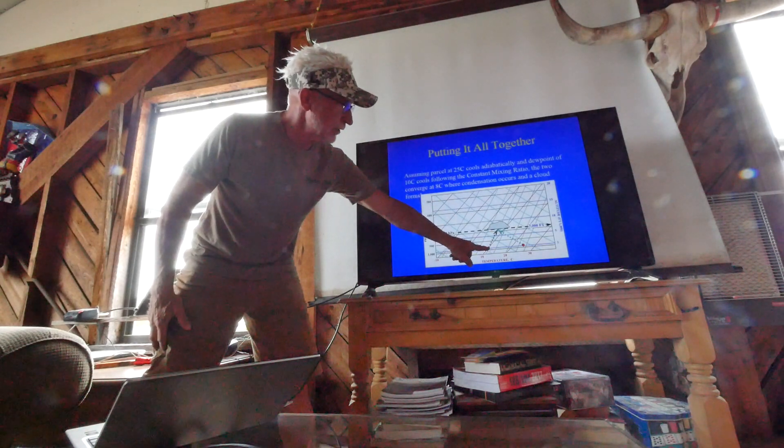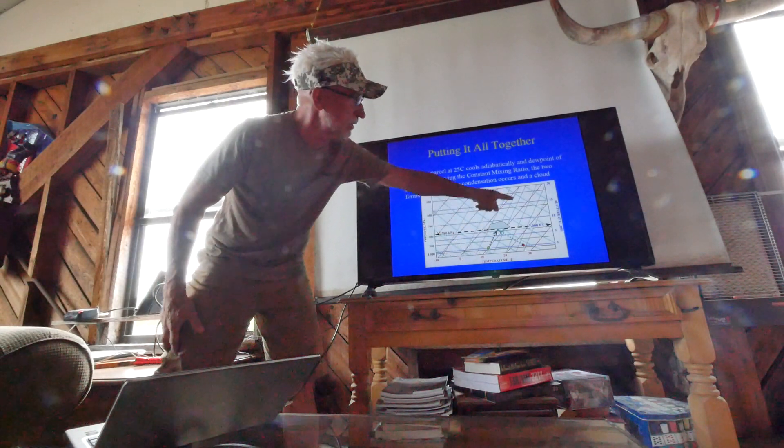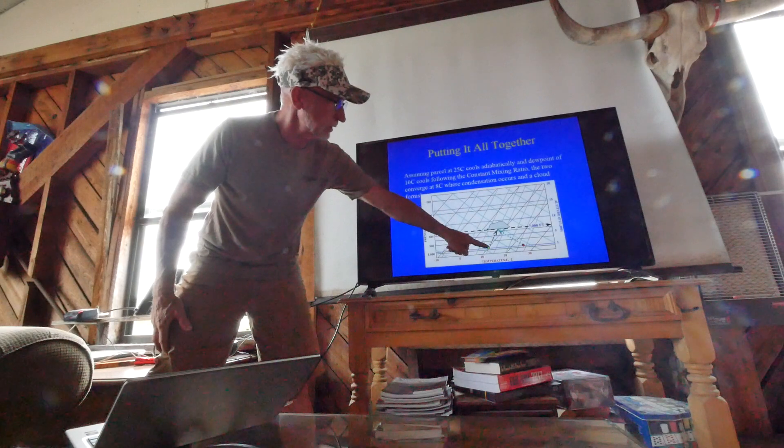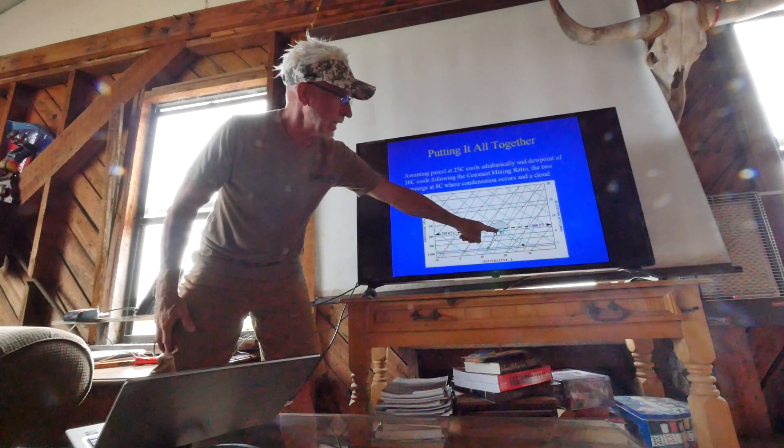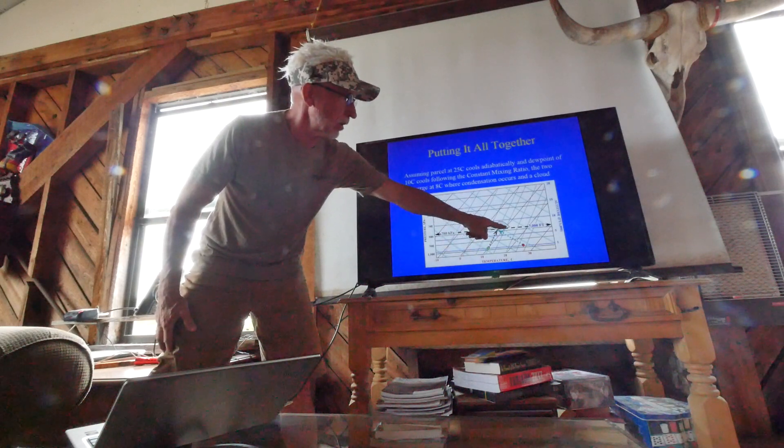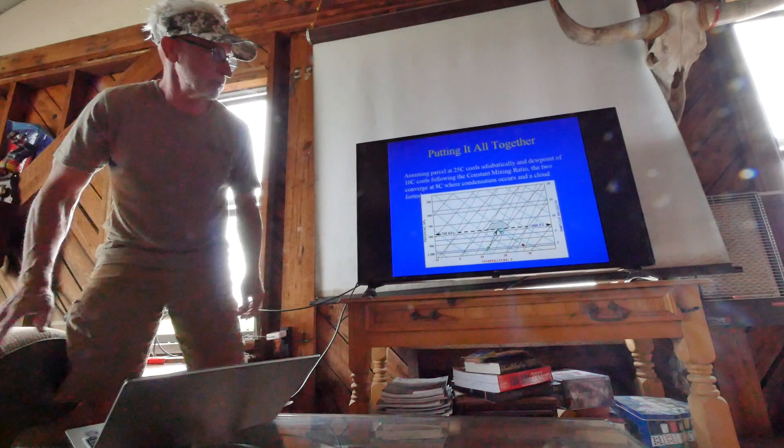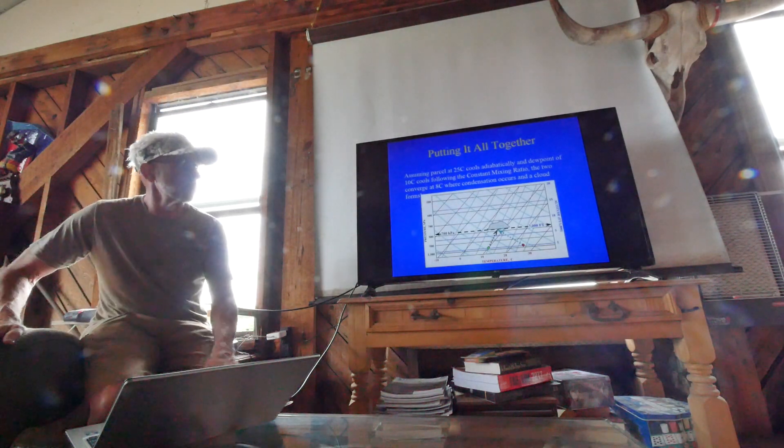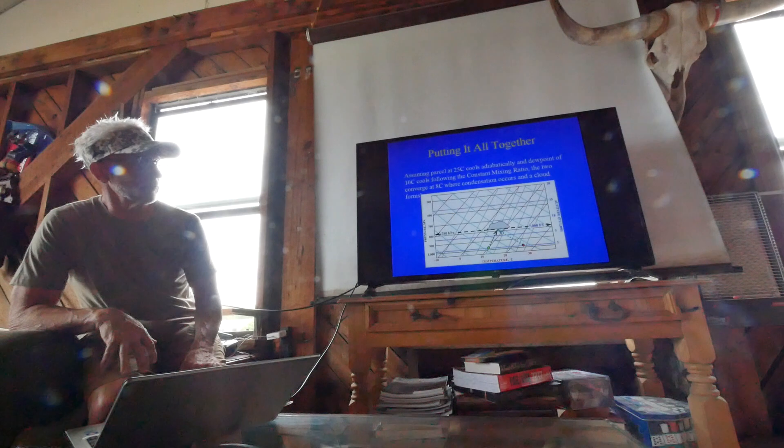This is the dew point line here that is fixed. That is where condensation will occur and a cloud will form above that altitude. In that case, it's 7,000 feet.